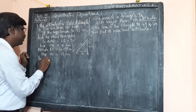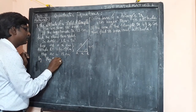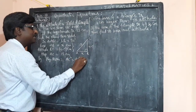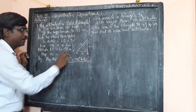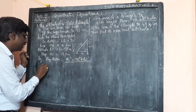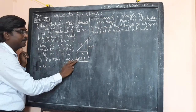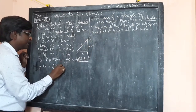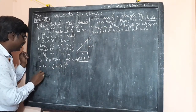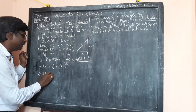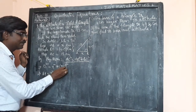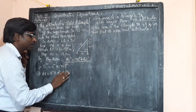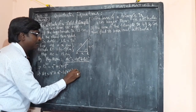By Pythagoras theorem: AC² = AB² + BC². Substituting, AC² = 13² = 169, AB² = x², and BC² = (x minus 7)². So we have 169 = x² + (x minus 7)². Now expanding (x minus 7)² using the identity (A minus B)² = A² minus 2AB plus B², we get 169 = x² plus x² minus 14x plus 49.